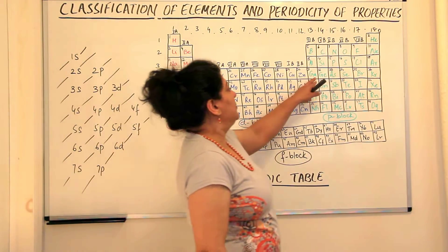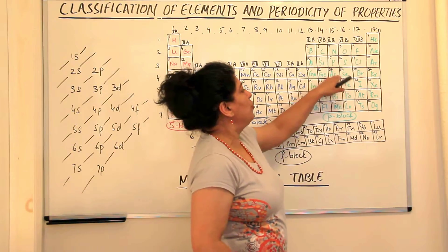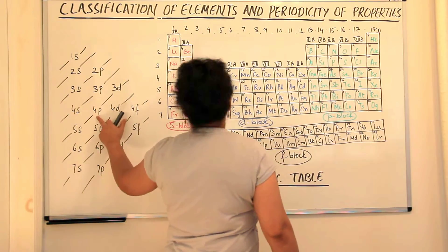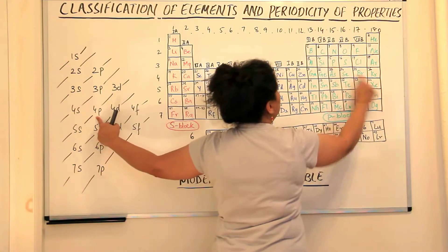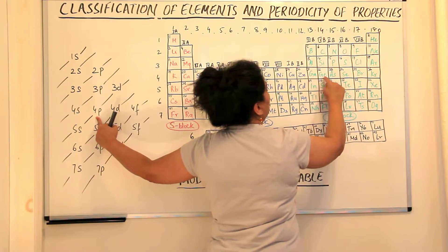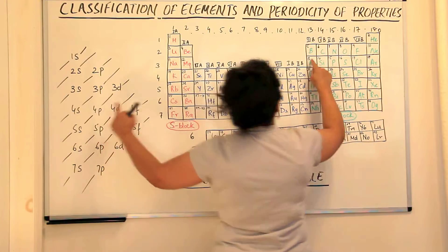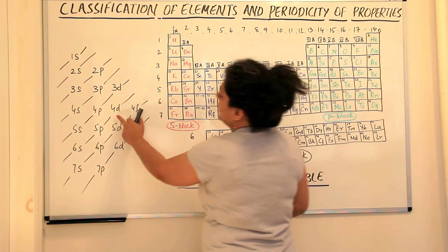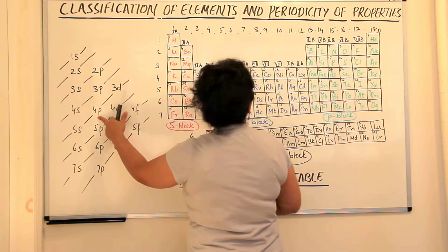Now after gallium, the next five electrons also go to the 4p orbital. So you have these six elements: gallium, germanium, arsenic, selenium, bromine and krypton. All of these are going into the 4p orbitals.